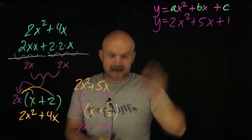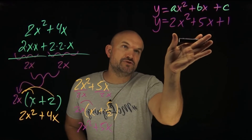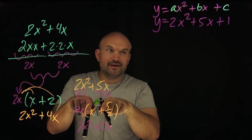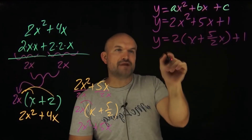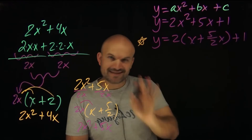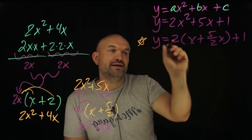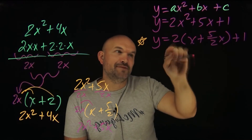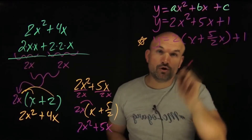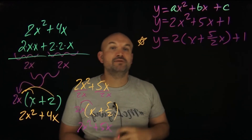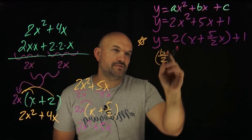In a case like this I just want to factor out the first two terms, because I want to focus on creating a perfect square trinomial from those first two terms. So we factor out the 2 as we just did, and now we have a quadratic inside where a equals 1 — which is required to complete the square. Inside the parentheses the coefficient of x squared is 1, so we're good to go. To complete the square we take b divided by 2 and square it.